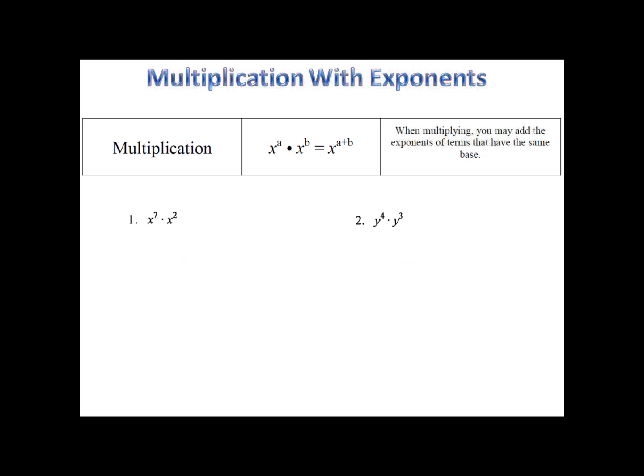In our notes, our first example beautifully demonstrates this property. We have x's in both cases, and we have an exponent of seven and an exponent of two. We combine the things that are the same. Seven plus two is nine, so we have x to the ninth. How about number two? Pause the video here and then come on back.